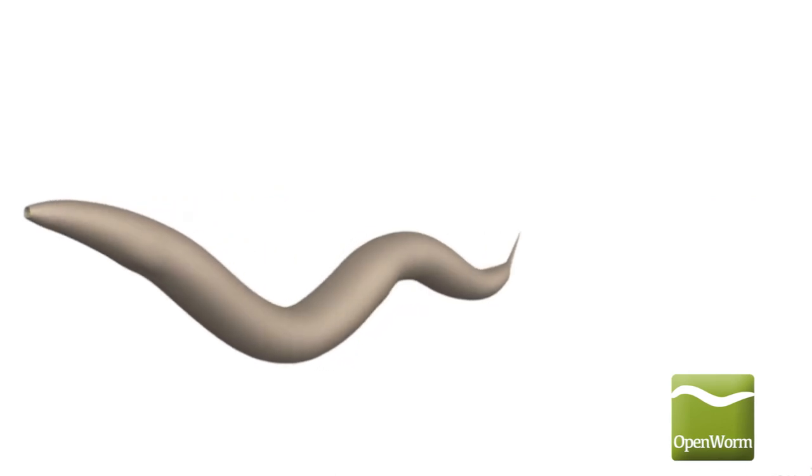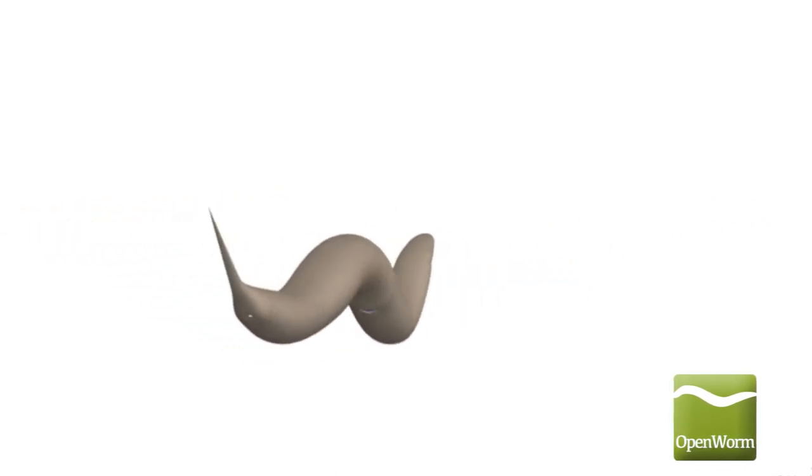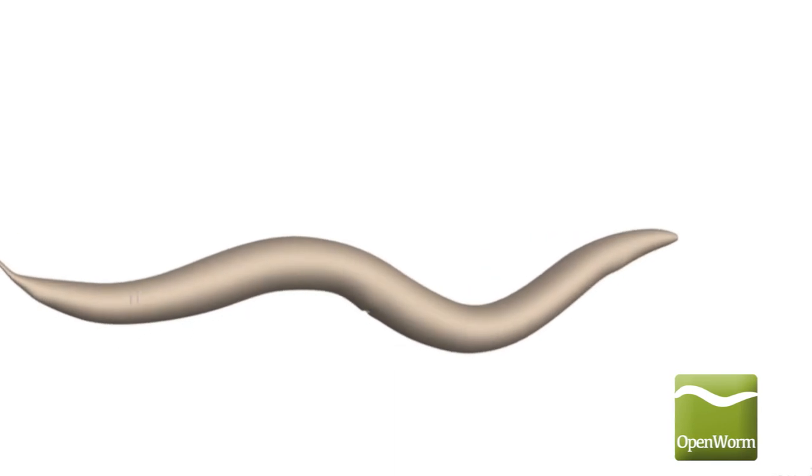C. elegans is a microscopic roundworm, also known as a nematode, that is 1 mm long. These nematodes are usually found in temperate soil environments worldwide.